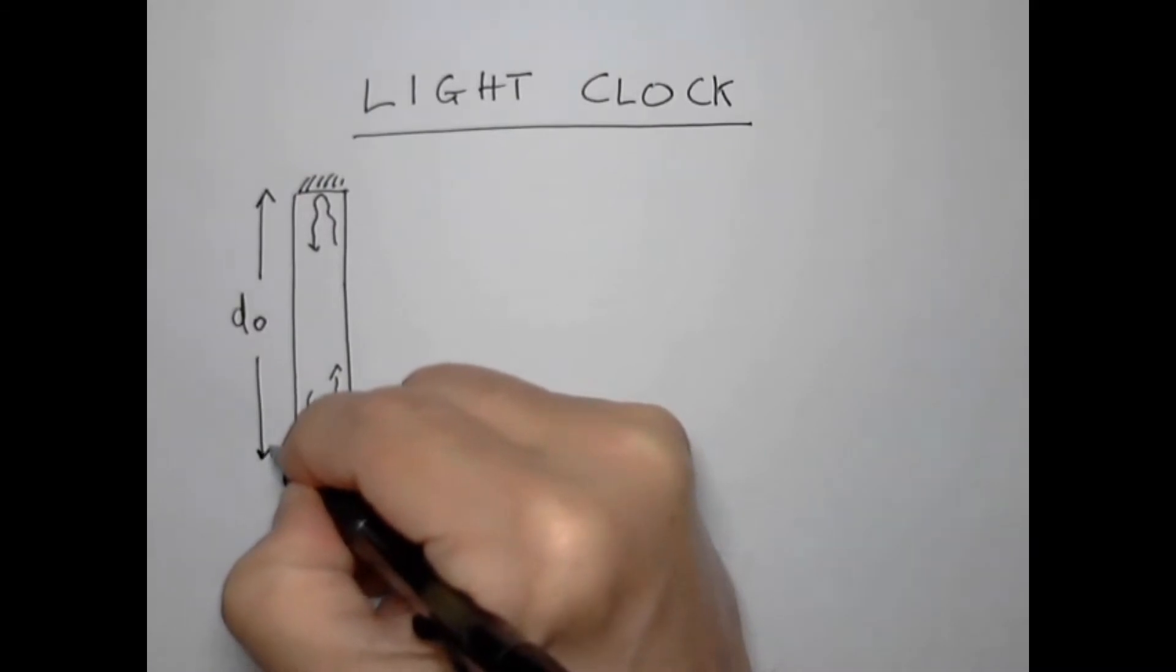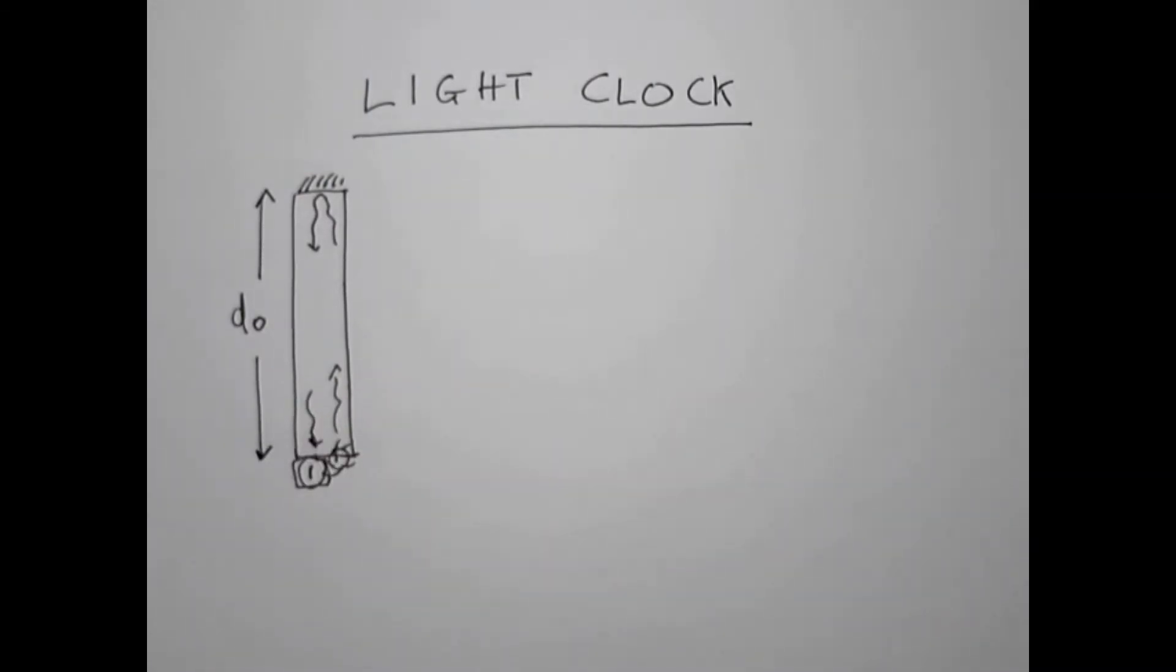Now, we are going to be looking at this light clock when it's moving and we might have to think, does d0 change? Well, we'll take a look at that in a minute. But for now, let's just take a look at the signal that goes from the light to the mirror and back.